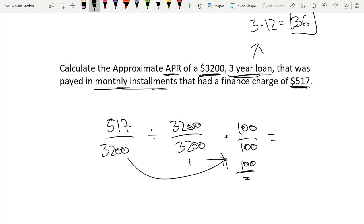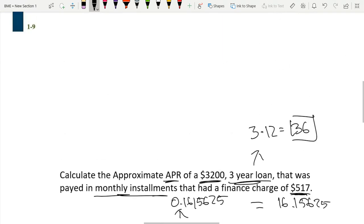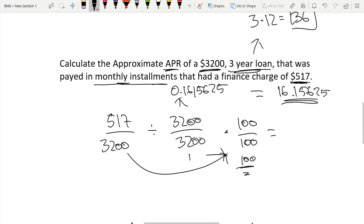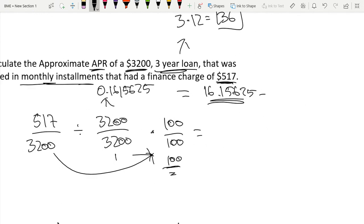So 517 over 3200 equals 0.161565625. If we multiply it by 100, we get 16.15625. That is our finance charge per $100.